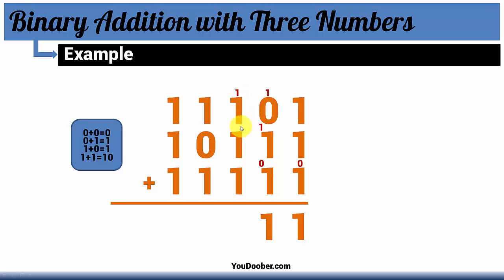So 0 plus 1 equals 1. Here we have 1 plus 1, and that's 0, carry our 1 to the next column.